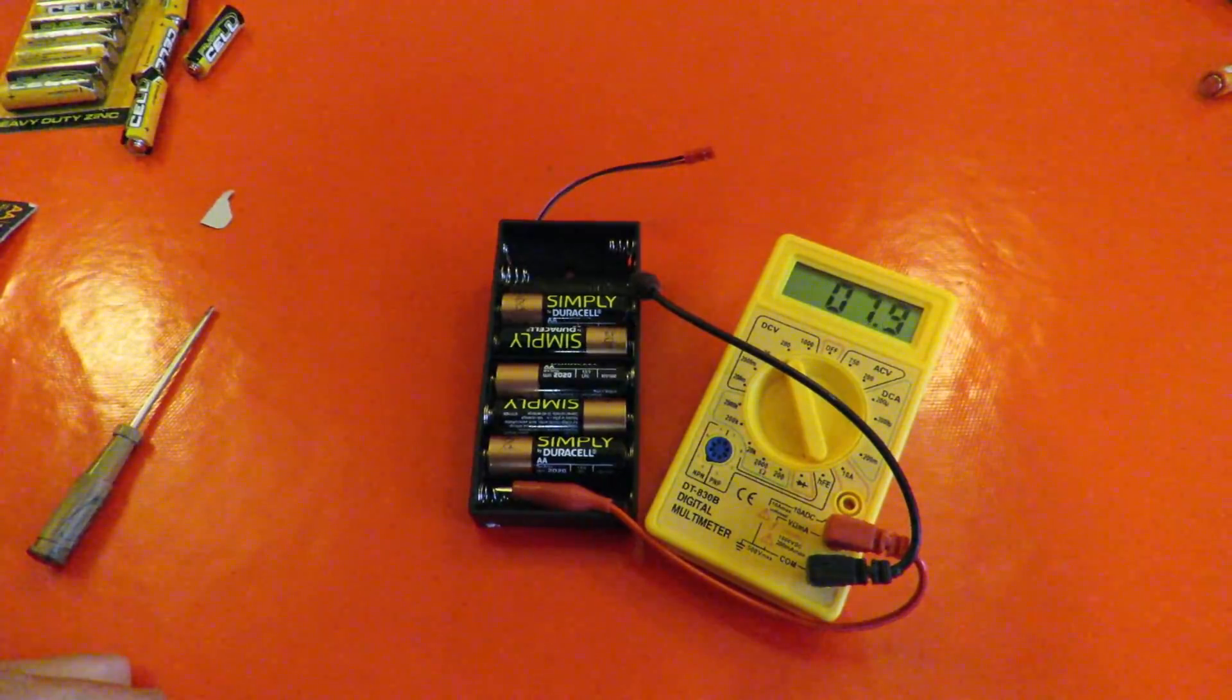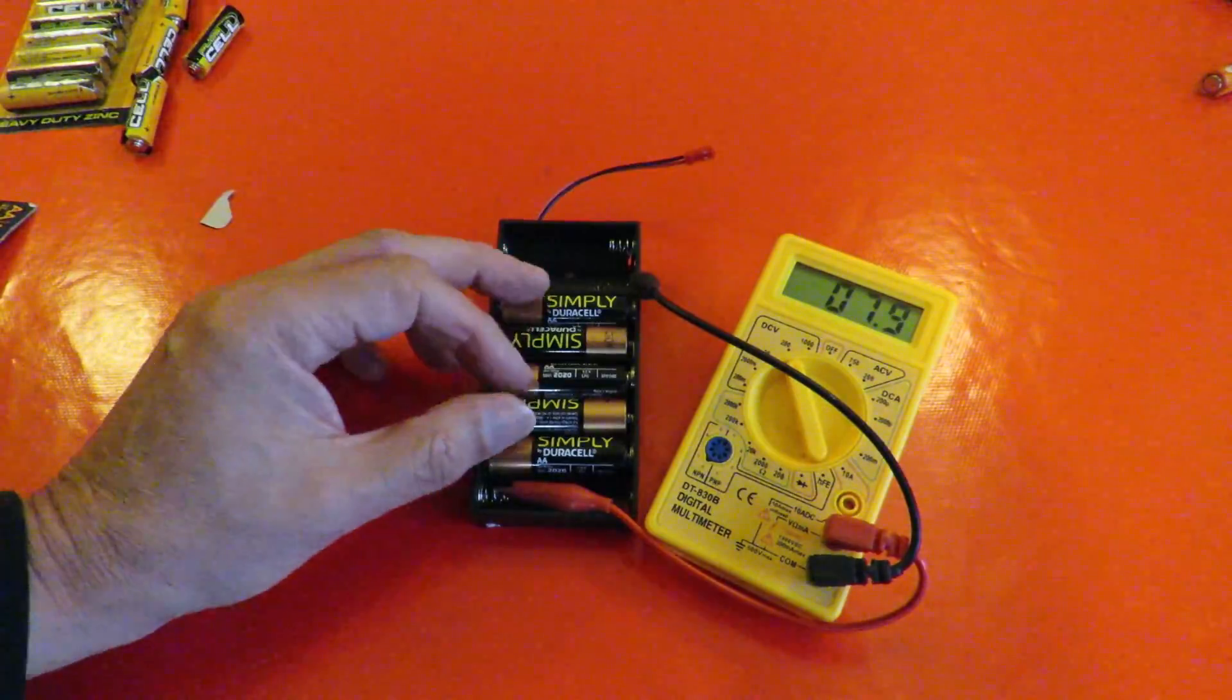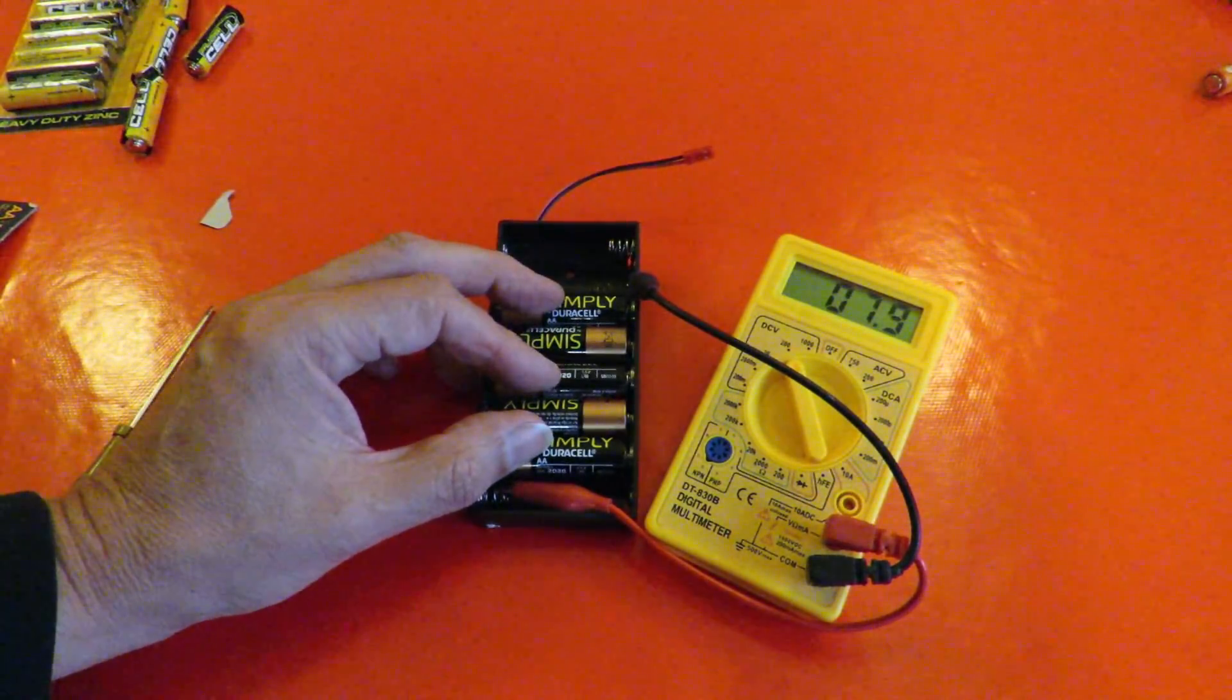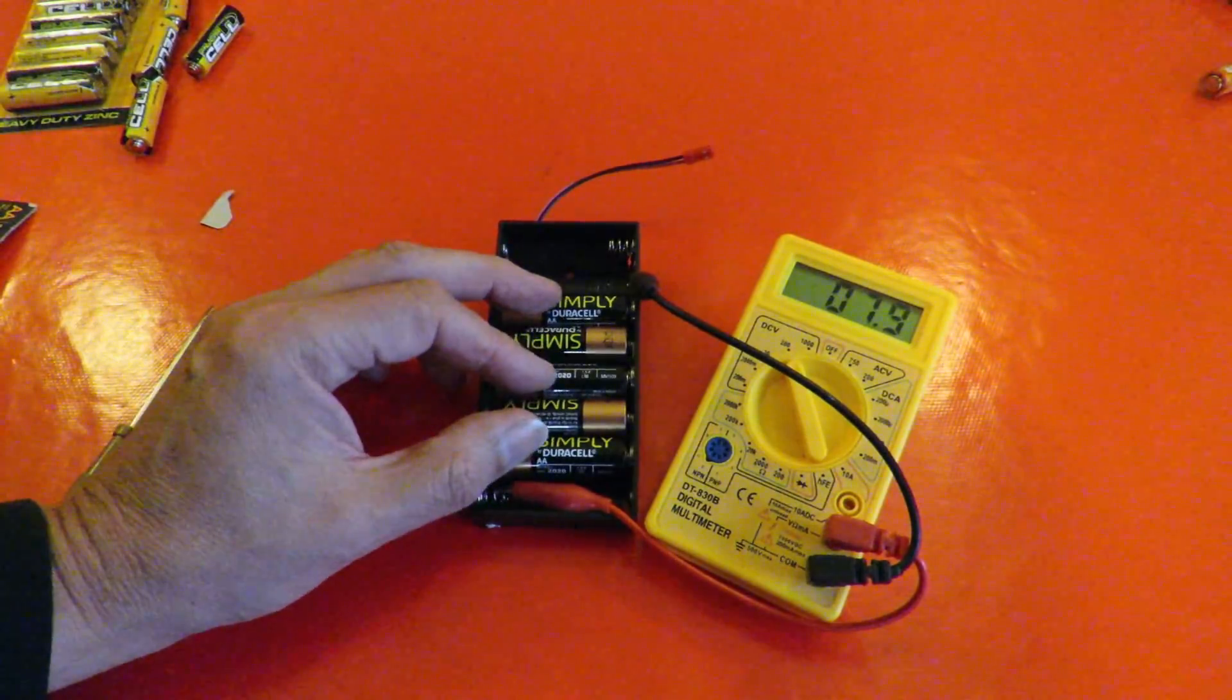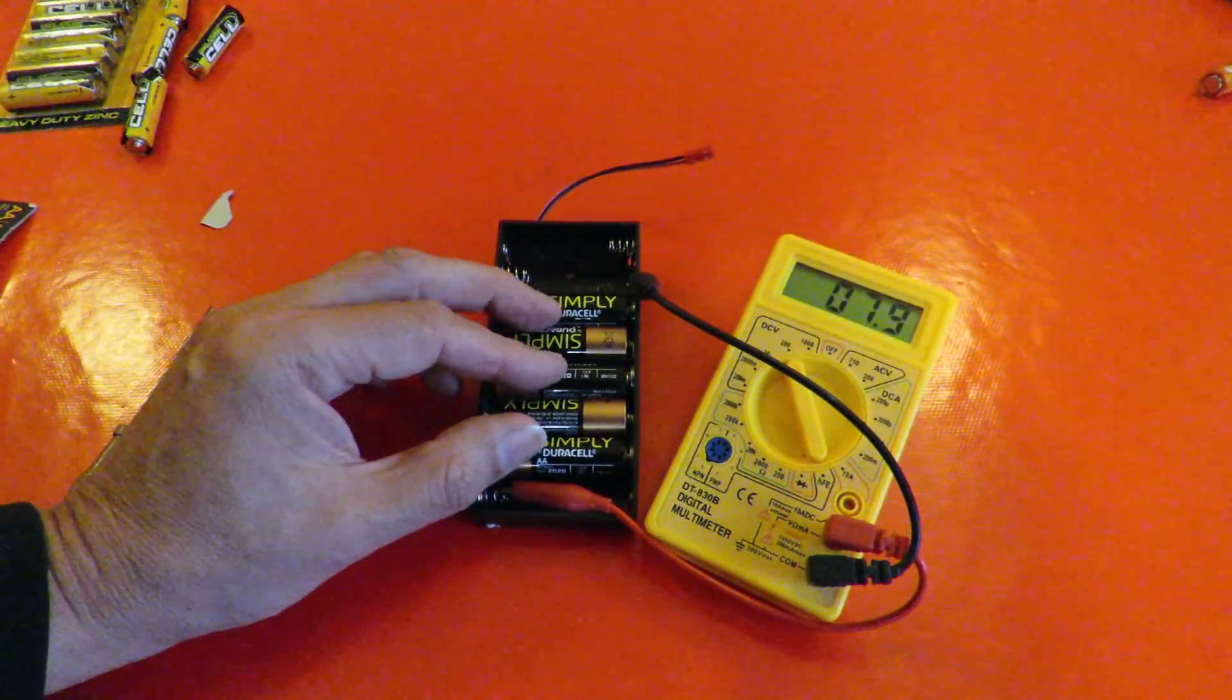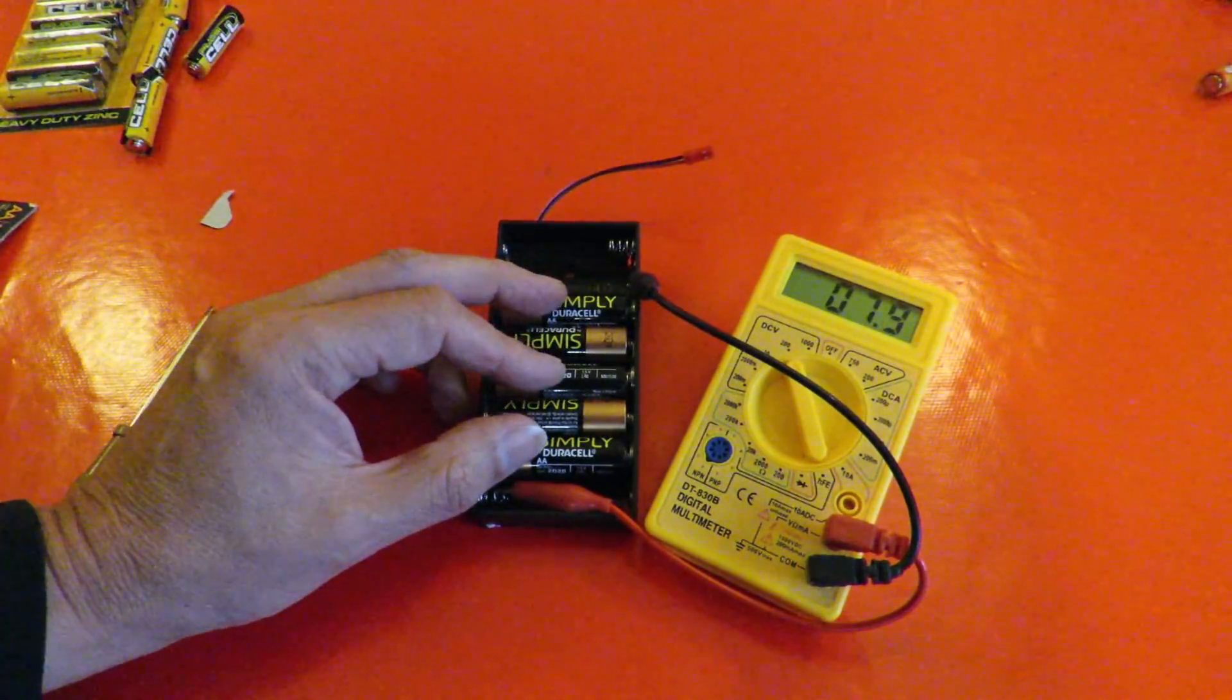So your radio control car designer or the circuit board designer, if he knows he's got to handle five double A batteries, he's going to design it to handle more volts than just 7.5 volts. He knows it can be handling over 8 volts.